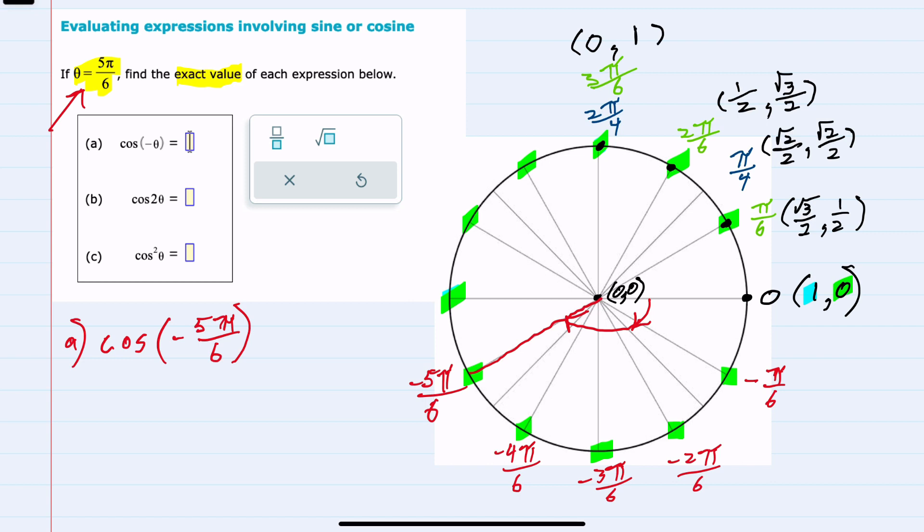And to find the cosine, we need to locate the x value at this point on the unit circle. And from here I know that the x value, or cosine, is going to be this x value, which will be the opposite sign of this x value.